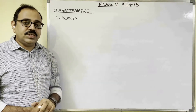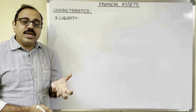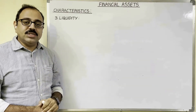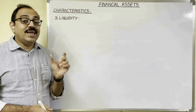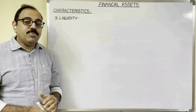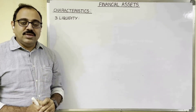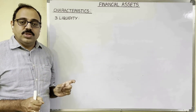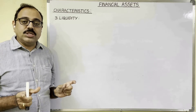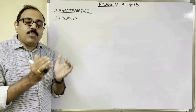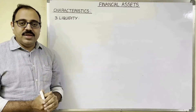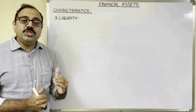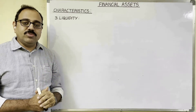For example, if a shareholder wants money, through a stockbroker the shareholder can convert shares into cash. But some financial assets are illiquid in nature. For example, a life insurance policy cannot be sold through a broker like shares. If the insured takes a policy for 10 years, he has to wait until maturity, at which point only the insurance company pays the policy amount.